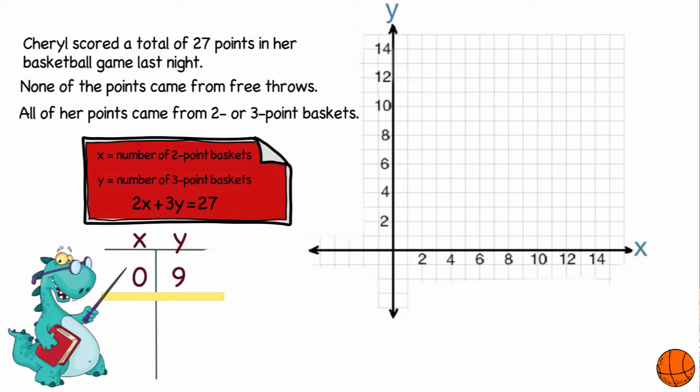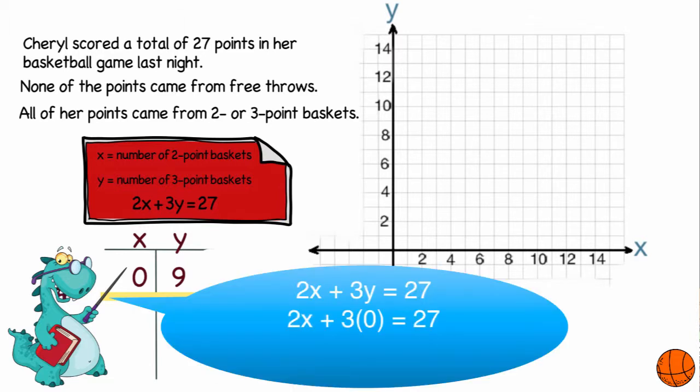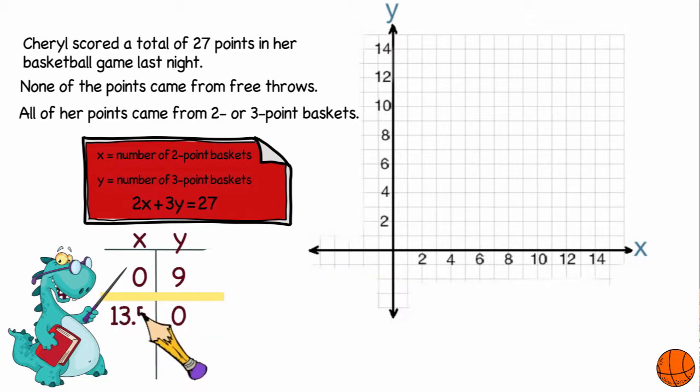A second coordinate that I could easily graph is if she had made no three-point baskets at all. So that means my y-value would be zero. And that would give me 2x plus 3 times 0 equals 27. And now I have 2x equals 27. Divide both sides by 2. I get x equals 13.5. Now we know this is not possible. You can't make 13 and a half two-point baskets.